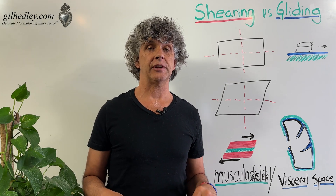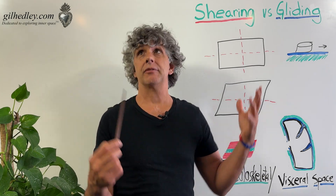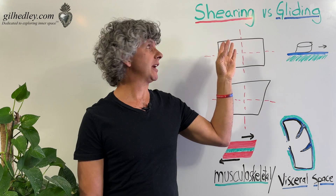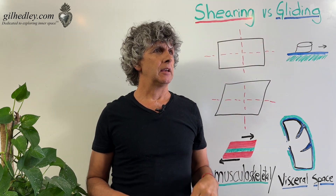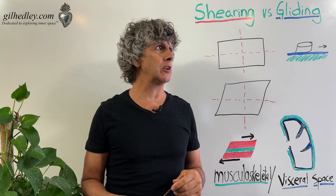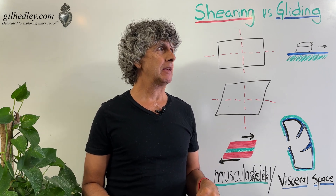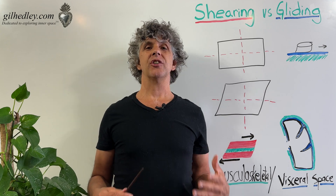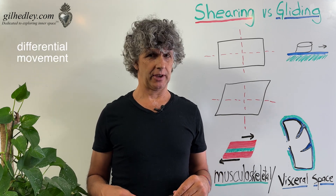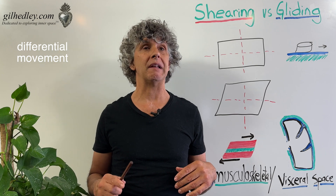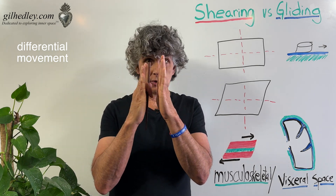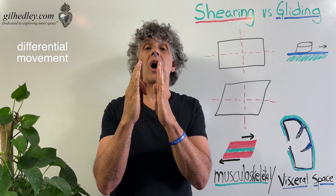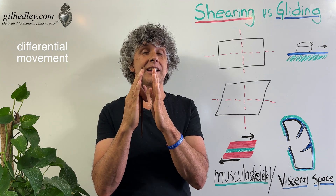I'd like to discuss the difference that I think we can define between shearing and gliding in our world and in our tissues. I use these words a lot when I'm teaching anatomy and trying to help people understand the different ways in which differential movement manifests in our bodies. By differential movement, I mean the capacity for tissues to go in different directions at the same time, even while they're adjacent to each other and connected to each other.